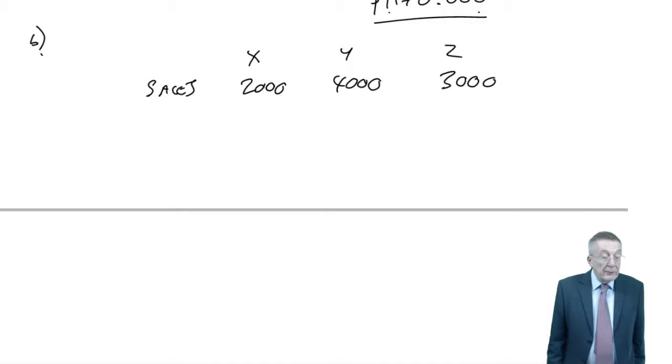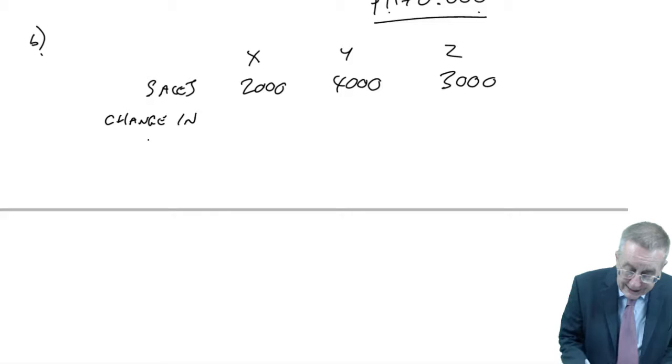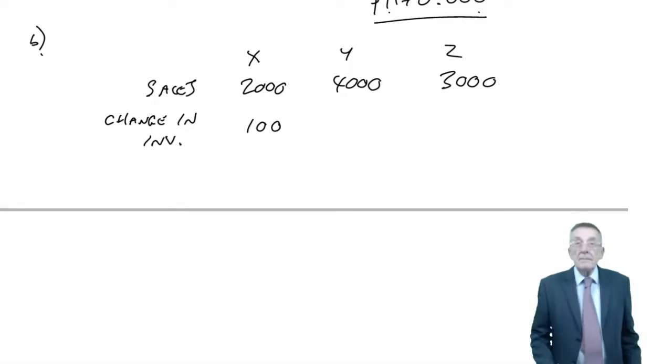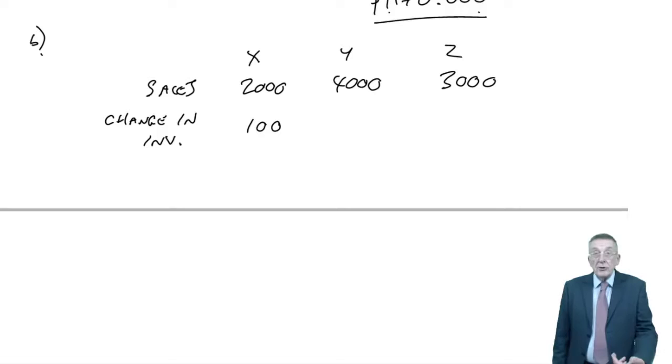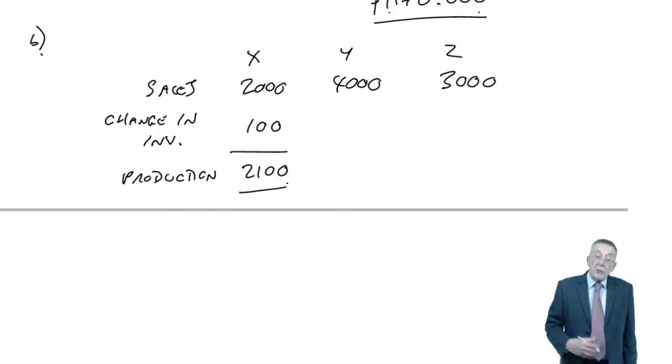Product X, we're starting the year with 500 units. But for whatever reason, at the end of the year, the closing, we want it to be 600 units. So, we want to increase the inventory. Change in inventory. Here, we want to increase it by 100 units. So, to do that, we're going to have to produce 2,000 to cover the sales, another 100 to increase the inventory. The production will have to be 2,100 units.